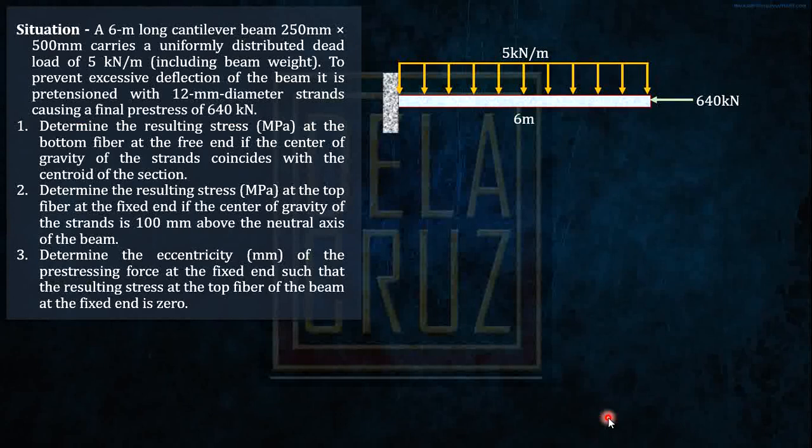Let's proceed to the situation. A 6-meter long cantilever beam, this is the beam, overhanging, prestressing force 640 kN. Let's proceed for part 1: determine the stress at the bottom fiber at the free end if the center of gravity of the strands coincides with the centroid of the section.